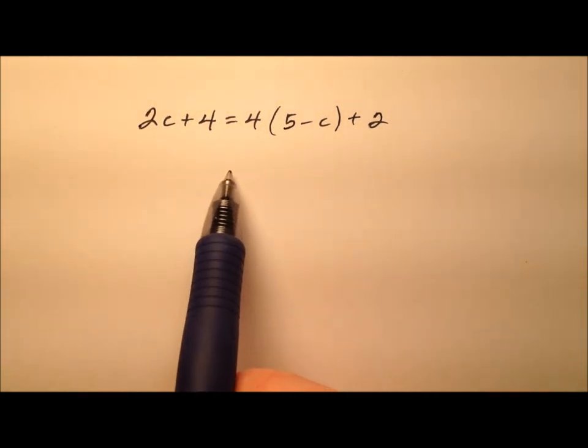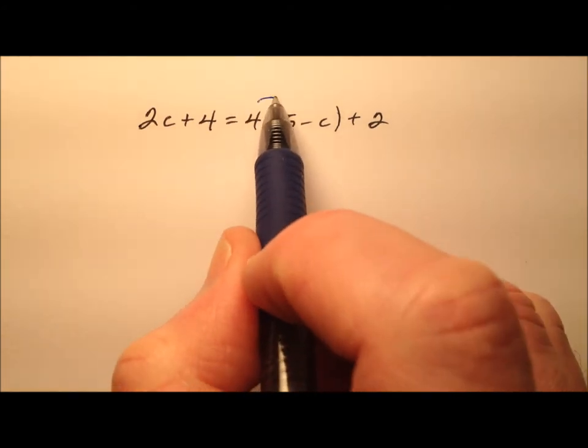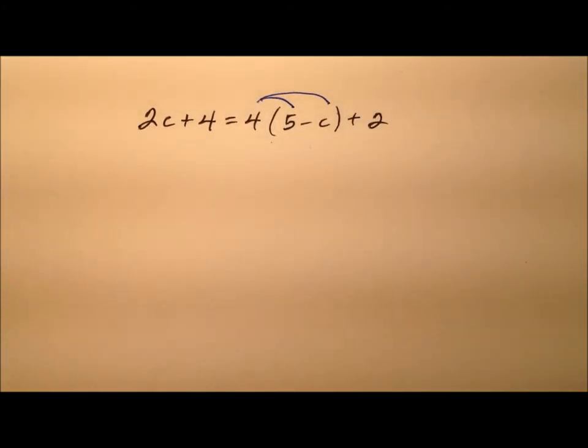Okay, so looking at this equation, it seems like we'd like to deal with these parentheses first, and we can do so by distributing that 4 through the parentheses.